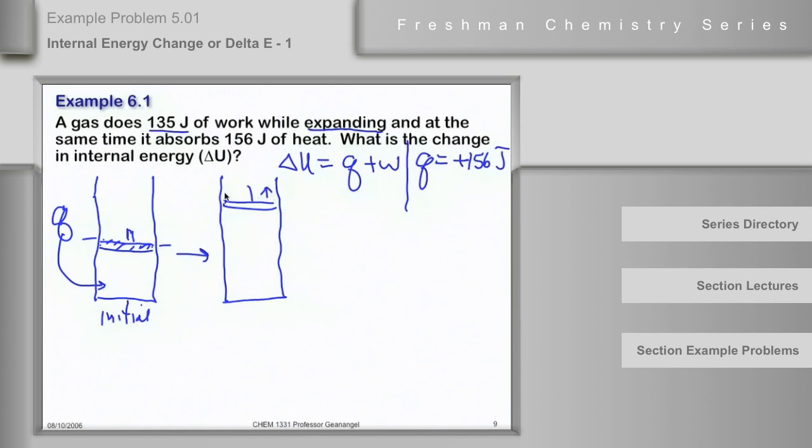So, this goes up, and of course, the atmosphere is pressing down on the cylinder, on the piston. So if the piston goes up, it has to push back the atmosphere. The work done is minus P delta V.